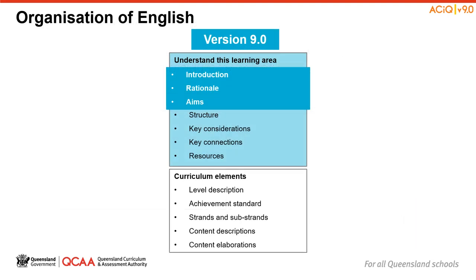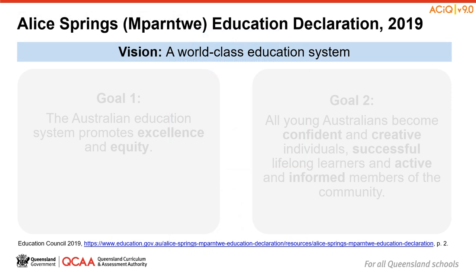We will begin by focusing on the intent of the learning area. We will explore the introduction, rationale and aims. In English, the introduction in Version 9 is one sentence: the Australian Curriculum English has been developed on the basis that all students will study English in each year of schooling from Foundation to Year 10. The rationale and aims then capture why we teach English and reflect the vision and goals for education in Australia. In doing this, it's important to consider the relationship of the rationale and aims to the goals of education in Australia.